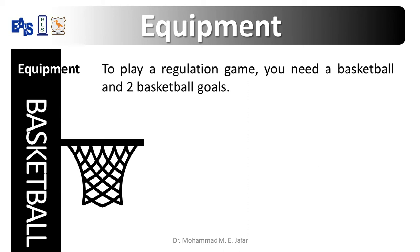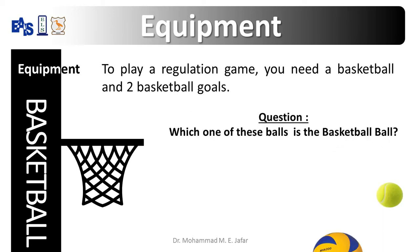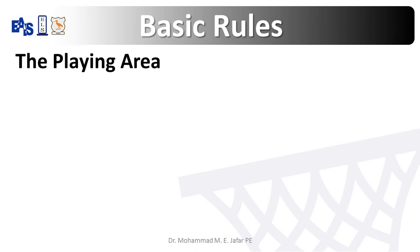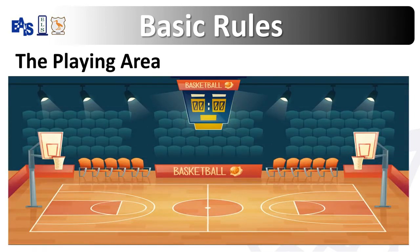To play a regulation game you need a basketball and two basketball goals. Now we have a question for you all — which one of these balls is the basketball ball? Can you point at it with your finger? Yes, good answer! The basketball court layout is rectangular in shape and is split in half by the mid-court line. There are two baskets, one located at each end of the court.